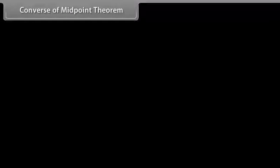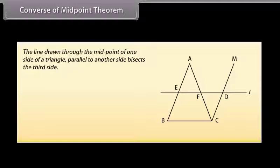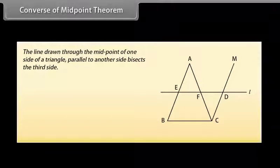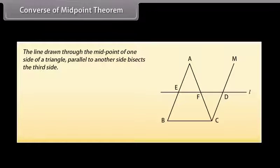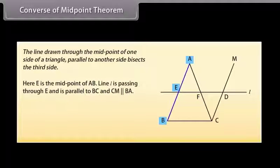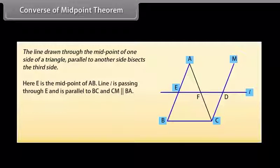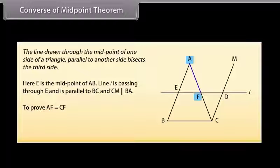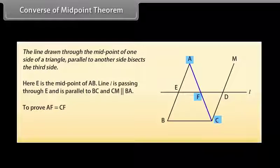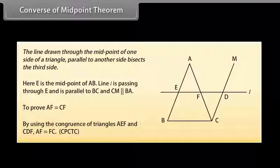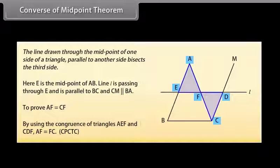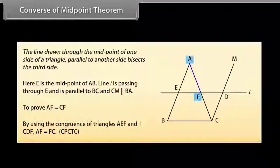Converse of midpoint theorem: The converse states that the line drawn through the midpoint of one side of a triangle, parallel to another side, bisects the third side. Here E is the midpoint of AB, line L passes through E and is parallel to BC, and CM is parallel to BA. We have to prove AF = CF. By using the congruence of triangles AEF and CDF, we can prove that AF = FC.